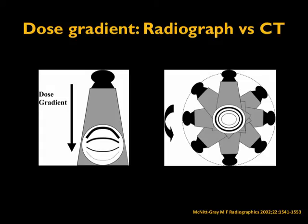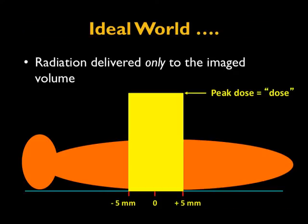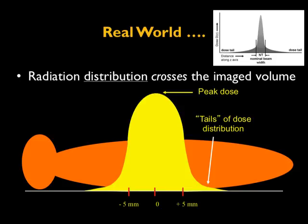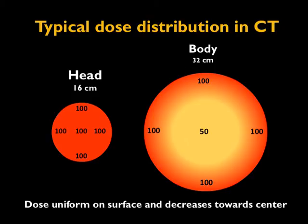It is important to understand the distribution of CT dose and how it translates into dose measurement. Ideally, the radiation dose delivered in CT should be like a square block — if you use a 10 mm slice thickness, the anatomy exposed should be exactly 10 mm. However, in the real world, the distribution is more like a bell curve: the actual peak dose contributes to only a small portion of the slice, with a tail end. Because of this, we also need to understand how CT dose distribution varies for different patient sizes.